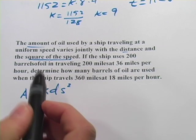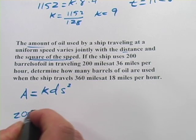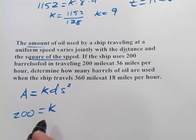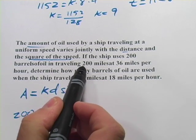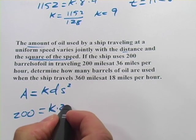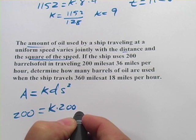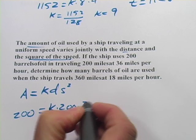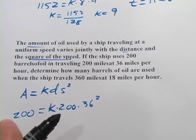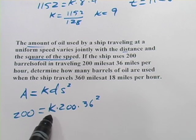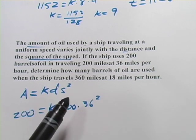Now, if the ship uses 200 barrels of oil, so 200 barrels of oil, that's our amount. We have our constant, and then the distance traveling 200 miles at 36 miles per hour. So the speed, but remember that it has to be squared, so 36 squared. So from this we can determine k, and then we'll use that to do the next part.